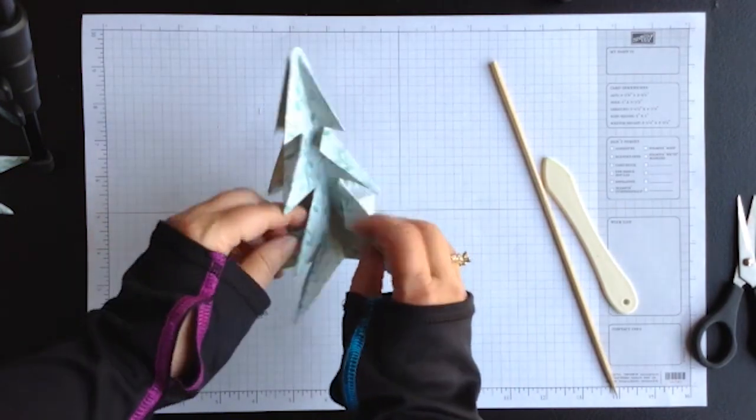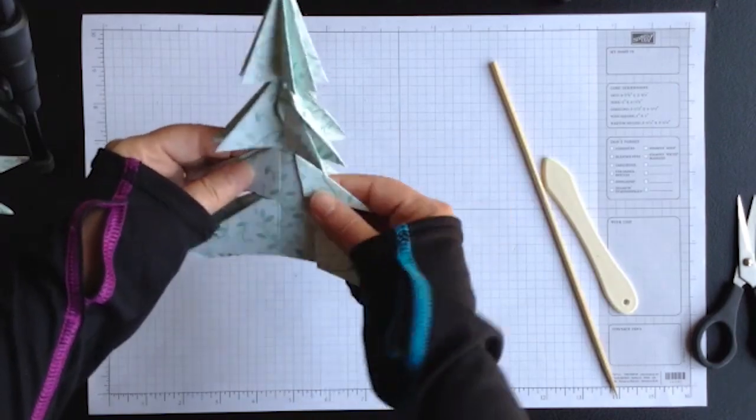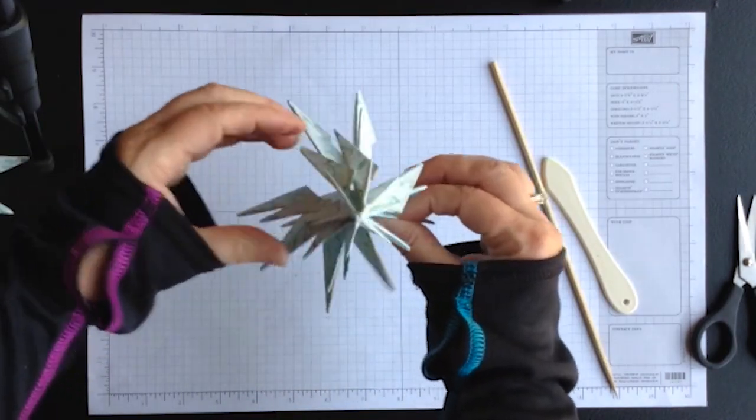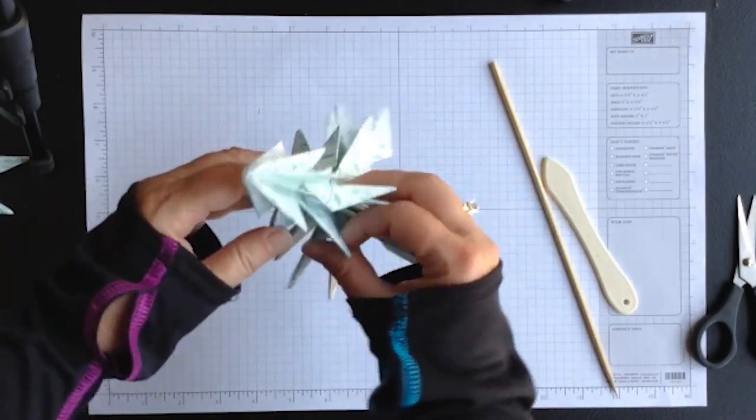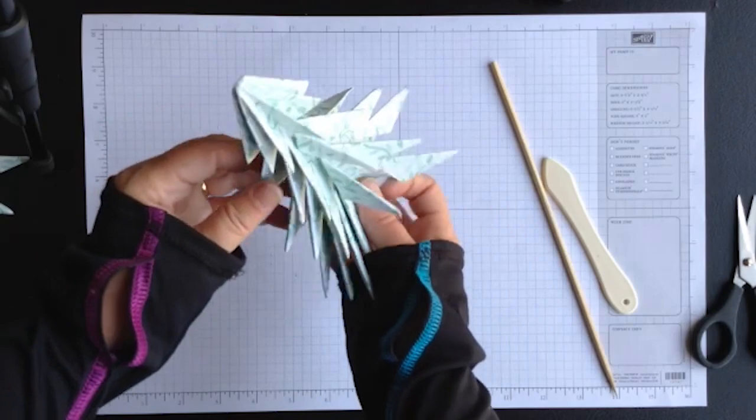Once you have those all folded then you open the tree and you can manipulate that a bit until you get everything even around the outside so that you have it nicely formed.